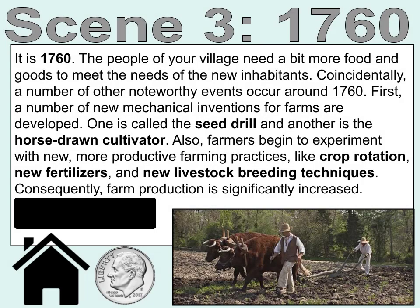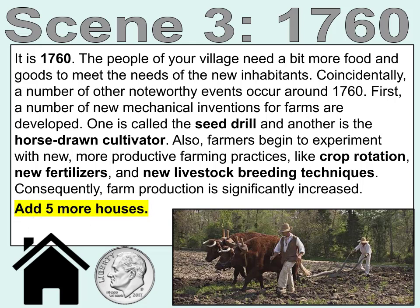Scene 3. It is 1760. The people of your village need a bit more food and goods to meet the needs of the new inhabitants. A number of new mechanical inventions for farms are developed — one is called the seed drill and another is the horse-drawn cultivator. Also, farmers begin to experiment with new more productive farming practices like crop rotation, new fertilizers, and new livestock breeding techniques. Consequently, farm production is significantly increased. Add five more houses.